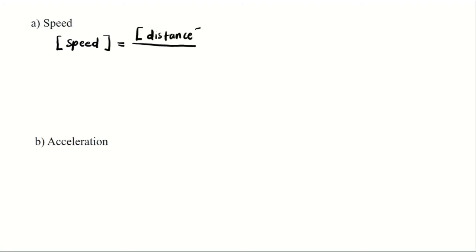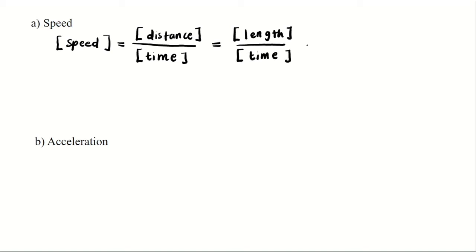We need to denote speed in bracket form. Speed is distance over time. Distance and time are also physical quantities, so we need to put brackets on them. We can also express distance as length. Remember, dimension is about expressing a physical quantity in terms of its basic quantity, so we need to go back to our six basic quantities.